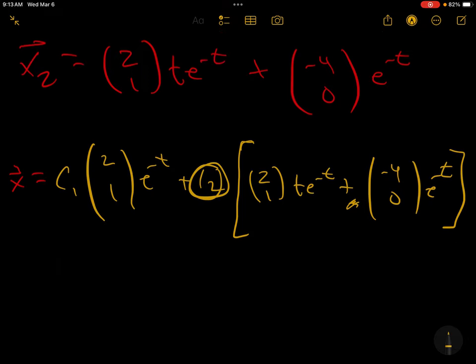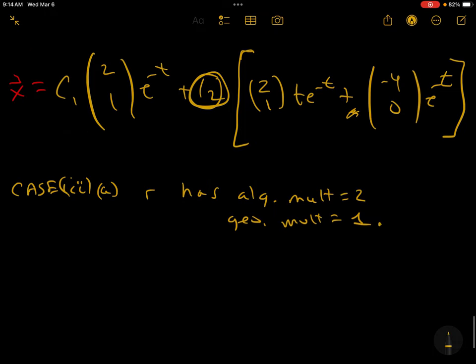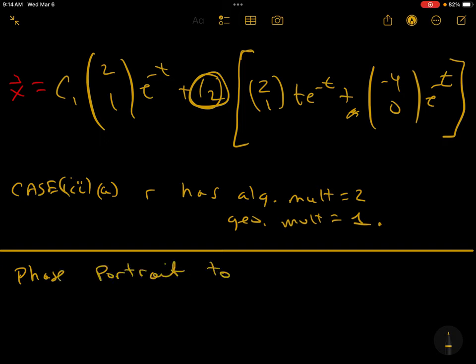So this is case 3, part a, where r has algebraic multiplicity equal to 2 and geometric multiplicity equal to 1. Case 3 part b will be where they're both equal, but we'll do that on Wednesday and I'll show you how to do the phase portrait. Phase portrait to come. All right, hope you all had a great break. I will see you hopefully tomorrow, Tuesday, come to my office and chat, or I'll see you on Wednesday in class.